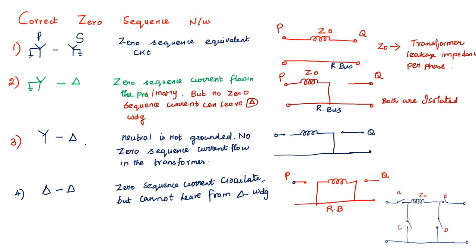For case three, Y-delta with neutral not grounded: A is open, so no zero sequence current flows in the transformer. A is open, C is open, B is open, and D is closed. For case four, delta-delta: zero sequence current circulates but cannot leave from the delta winding. A is open, B is open, C is closed, and D is closed.